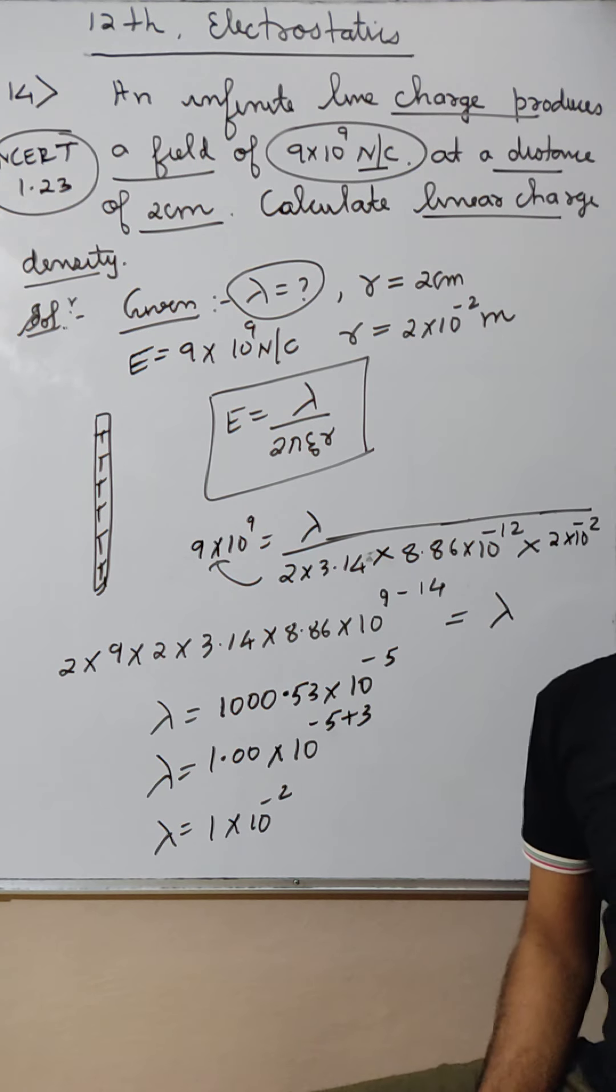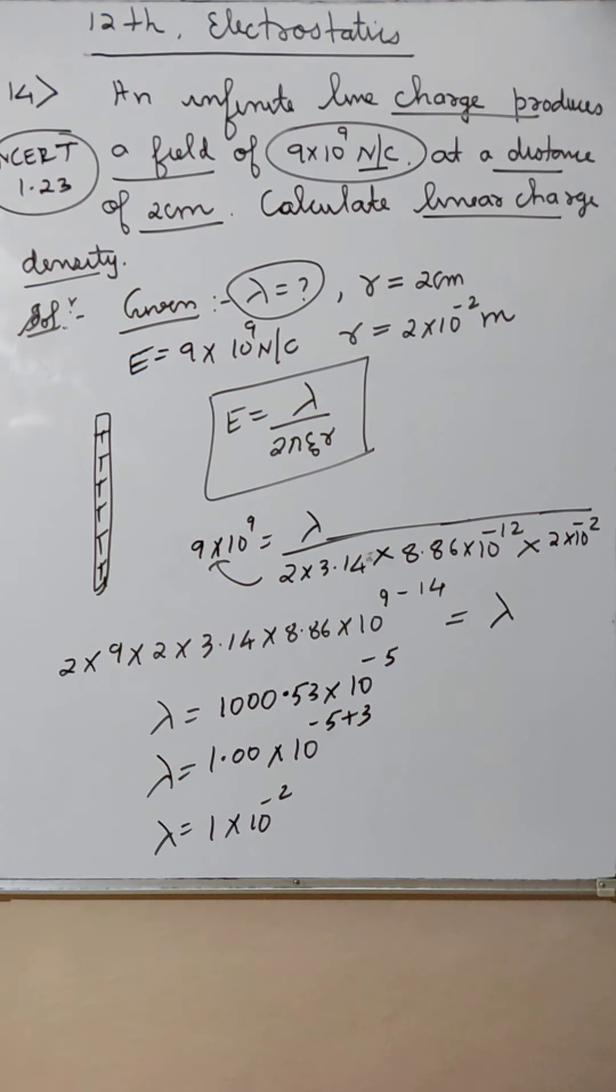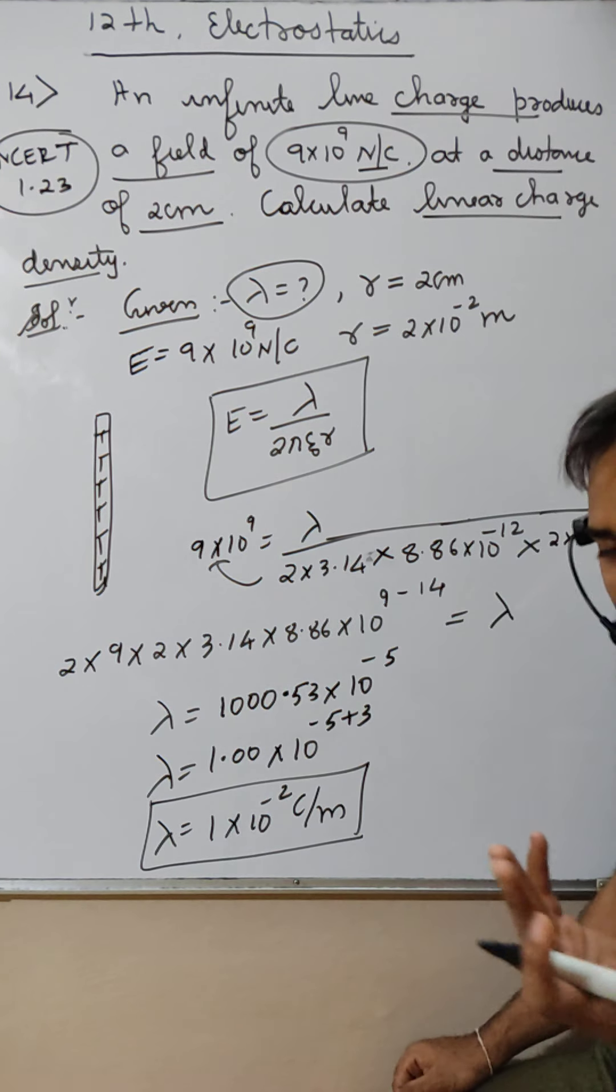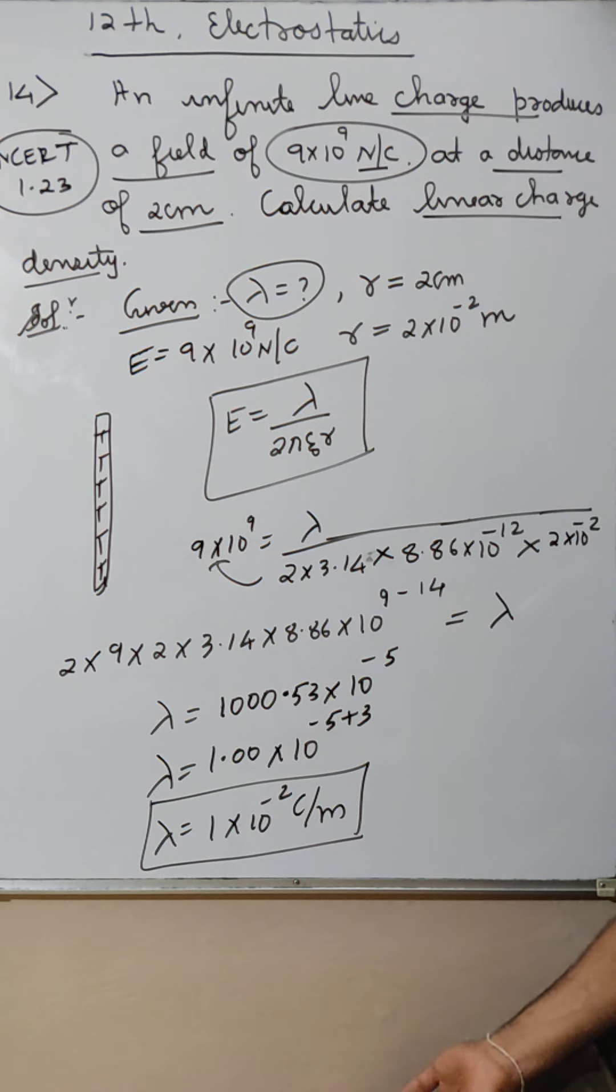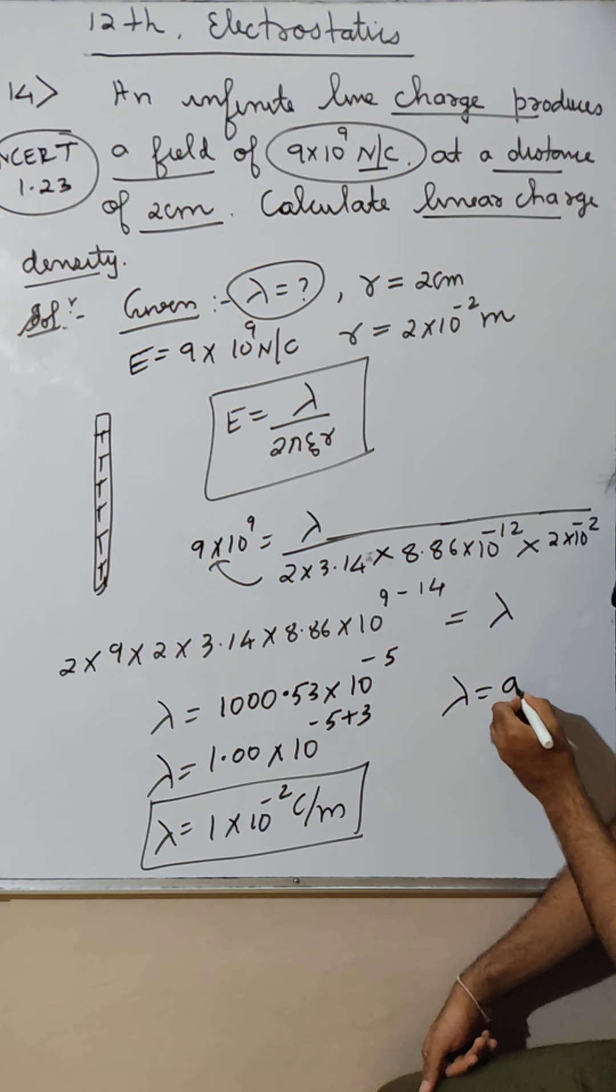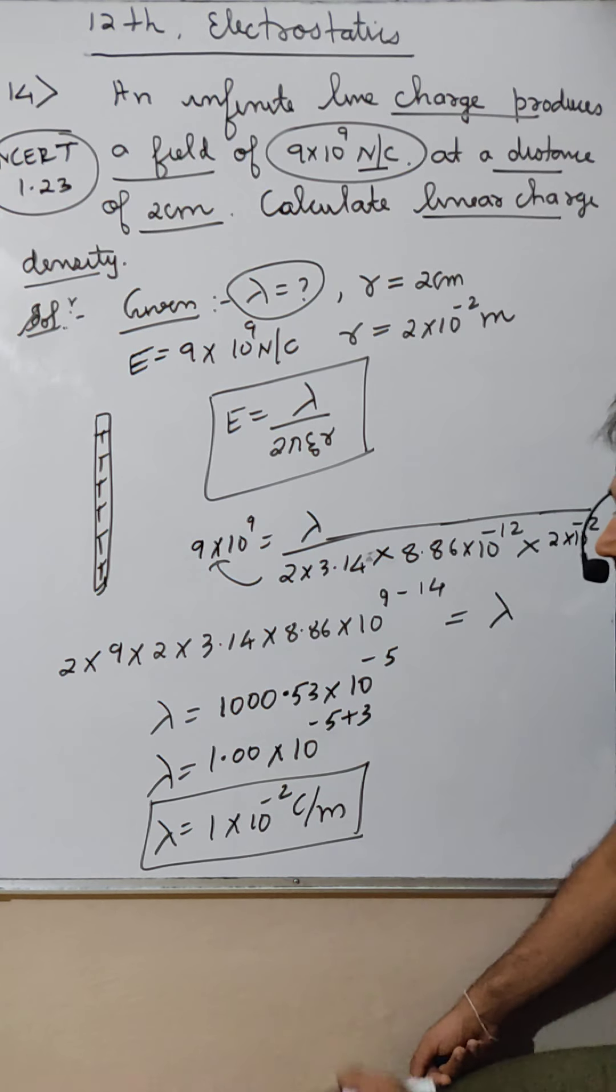Unit kya aeaga? 1 into 10 raised to minus 2, unit kya aeaga? Meter. Lambda meter. Distance measure kar raha hai. Charge density hai. Kya aeaga? Coulomb per meter.